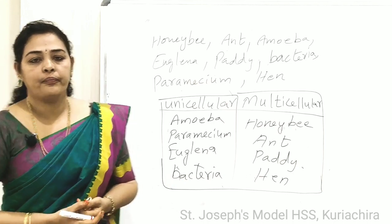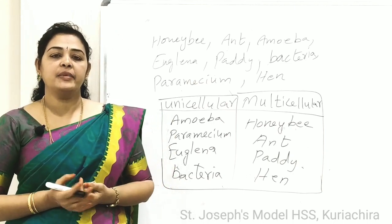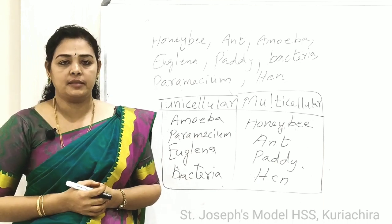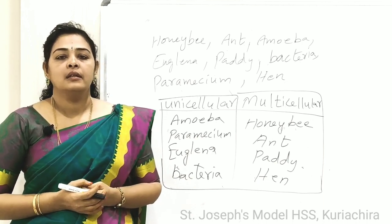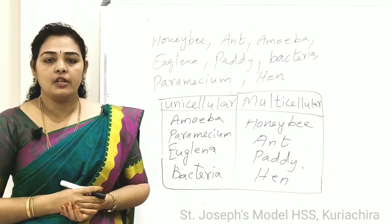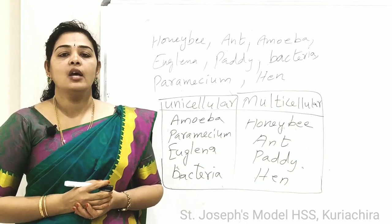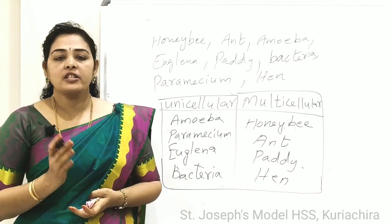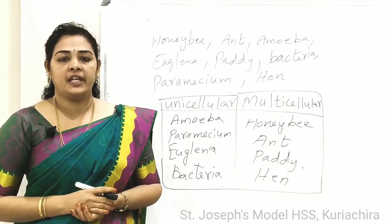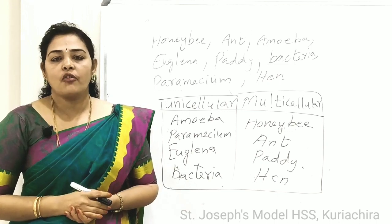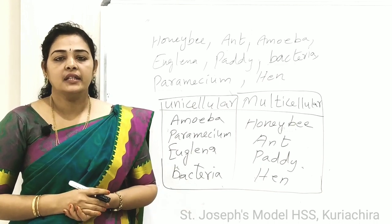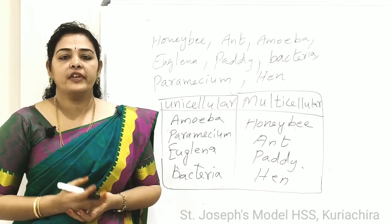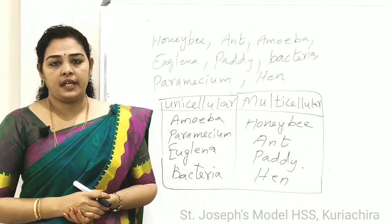The body of the ant is bigger than that of unicellular organisms. Why? In unicellular organisms, only one cell is present, so we cannot see them with our naked eye. But in the case of ant, there are thousands of cells present, so we can see it with our naked eye.